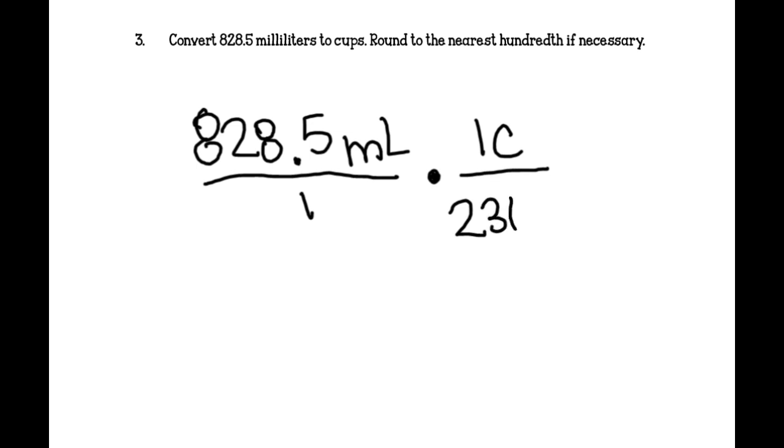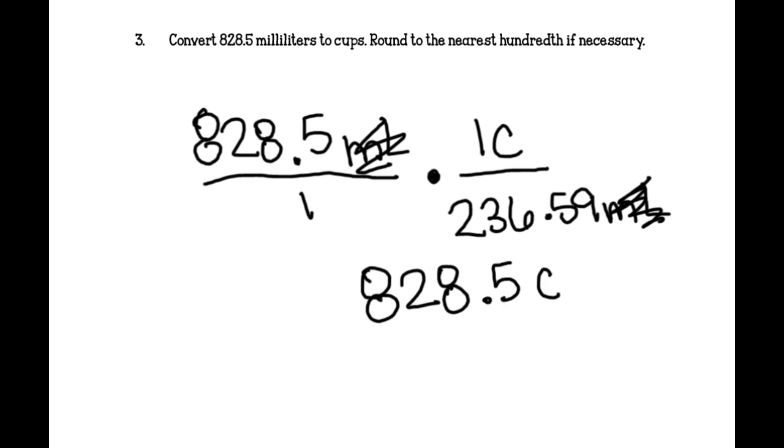Number 3, we are converting 828.5 milliliters to cups. And then we are going to round to the nearest hundredth if necessary. So, we set it up. We have 828.5 milliliters over 1 times. We are trying to convert to cups. So, we want for every 1 cup there are 236.59 milliliters. We can cancel out our milliliters. And then we just multiply straight across. So, we have 828.5 cups over 236.59. And then we go ahead and we do that division and we get about 3.5 cups. Or exactly 3.5 cups it looks like.